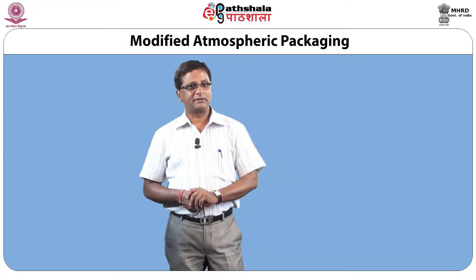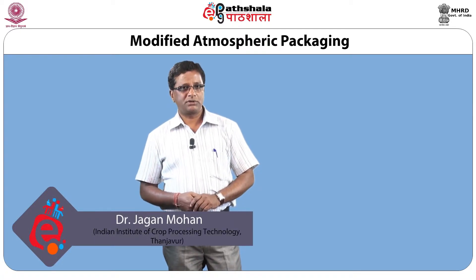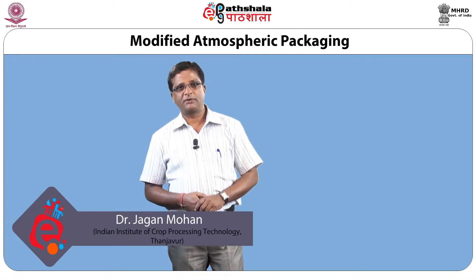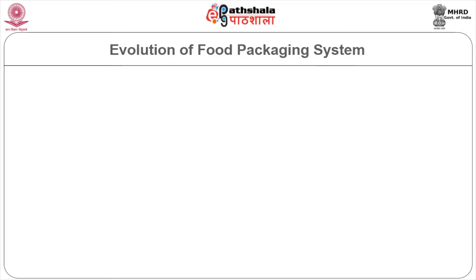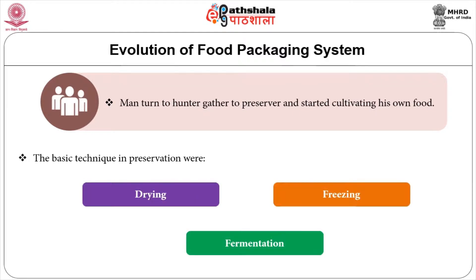Welcome to this session. This topic deals with the evolution of food packaging systems for the preservation of food. Man turned from hunter-gatherer to preserver and processor when he started cultivating his own food. The basic techniques in preservation were drying, freezing, and fermentation. All these techniques were on a smaller scale until the turn of the 19th century, when French scientist Nicholas Appert invented preservation by canning.